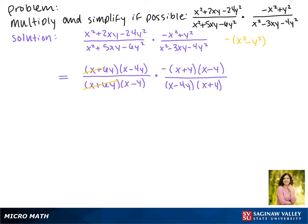Now that all of these have been factored, we can cancel out this x plus 6y. X minus 4y is on the top and bottom, x minus y is on top and bottom, and the x plus y.